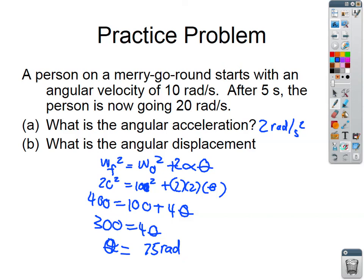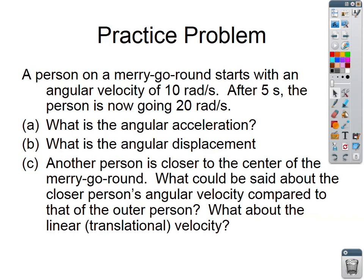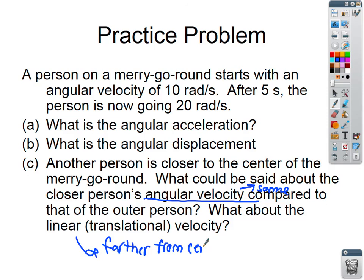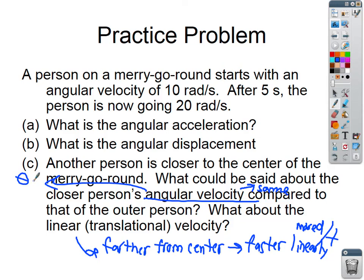Another question: a person is closer to the center of the merry-go-round. What could be said about the closer person's angular velocity compared to the outer person? Both people rotating on the same platform will have the same angular velocity — it doesn't matter where they are. But the person farther from the center is going faster linearly, because they cover more linear distance over the same amount of time.